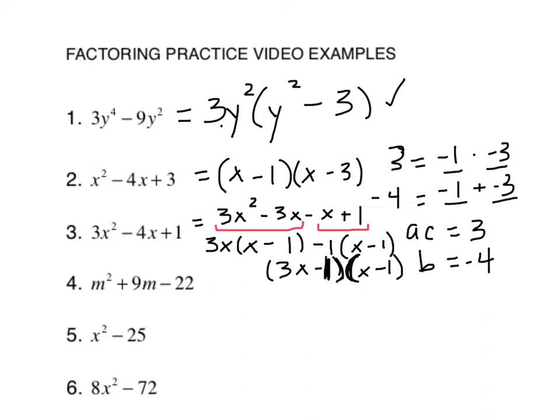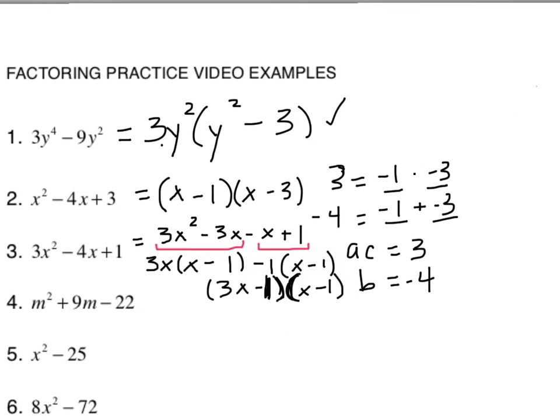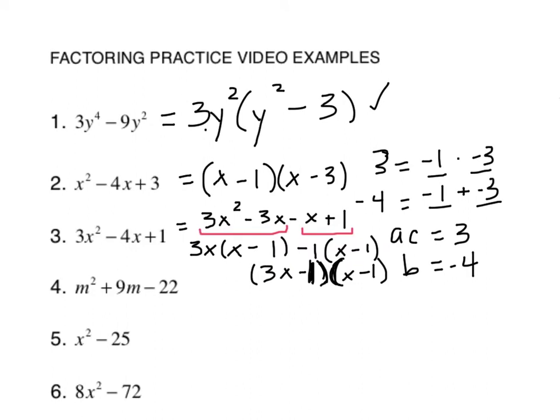All right. 1m squared, or just m squared. So m squared plus 9m minus 22. So I don't have a GCF. I don't have an a value. So this is one where I can just find factors of c that add up to b. Factors of negative 22 that add up to positive 9. Well, it's a negative 22. So I know one of them is negative and one of them is positive.